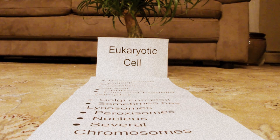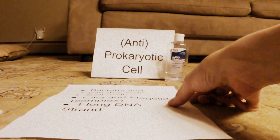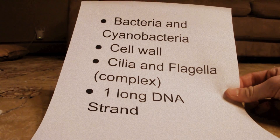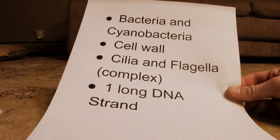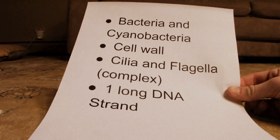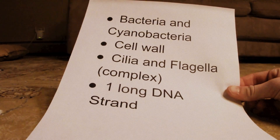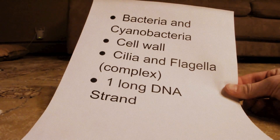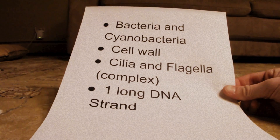Moving on to our prokaryotic cell. It's found in bacteria and cyanobacteria. It's made of a cell wall, which supports the cell. It has cilia and flagella, which aid cell movement, and it's made of one long DNA strand, as opposed to several chromosomes found in the eukaryotic cell.